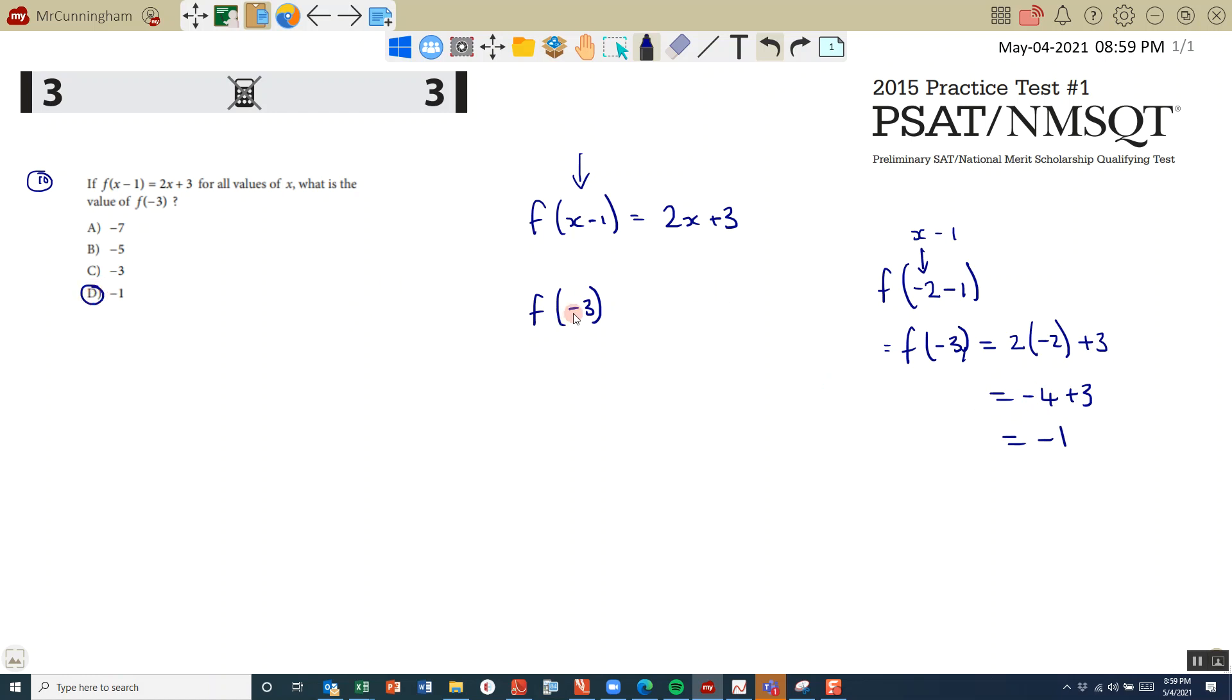Do not just sub negative 3 in. I'm thinking that's correct. I need to think: what value of x makes all of this negative 3? And the only value of x it can be is negative 2. Negative 2 take away 1 is negative 3. So you sub in negative 2 in your equation. You get negative 1.